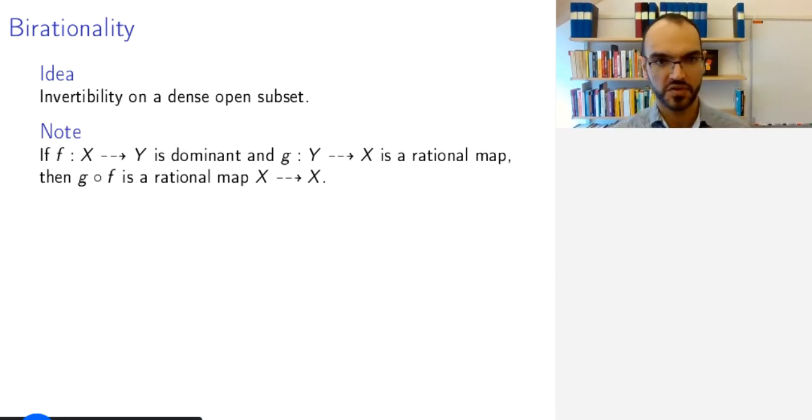The way to do this is first to observe that if you have a dominant rational map from X to Y, and a rational map back from Y to X, then because of the dominance of f, g composed with f is going to be defined on a dense open subset, so it's a rational map from X to X. Using this knowledge,